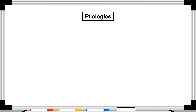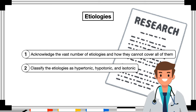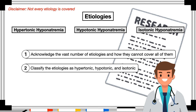Many publications that cover the etiologies of hyponatremia acknowledge the vast number of etiologies and classify them as hypertonic, hypotonic, and isotonic. After trying different ways of presenting this topic, I decided that same approach made the most sense. Not every possible etiology is covered, though I will highlight those you are most likely to encounter. The suffix 'tonic' refers to the blood plasma concentration compared to what it should be.